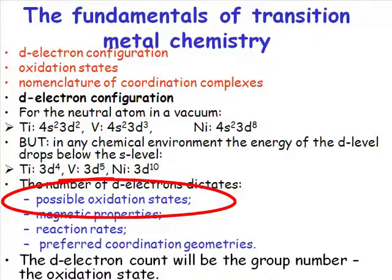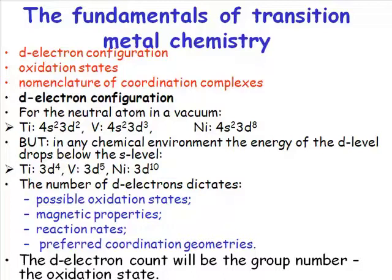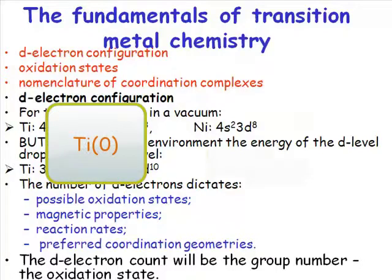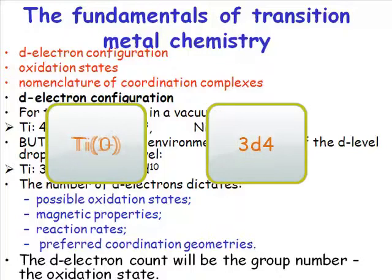Let's take titanium, for example. Titanium has the possible oxidation states of, well, if we're doing coordination chemistry, it could be titanium 0, which will be 3d4. It could be titanium 1+, which would be 3d3.